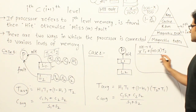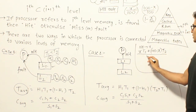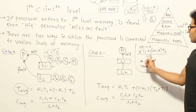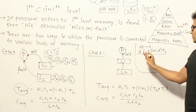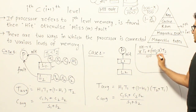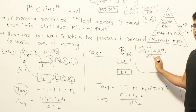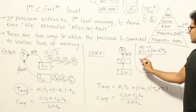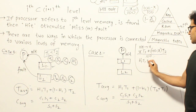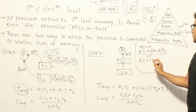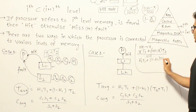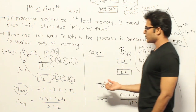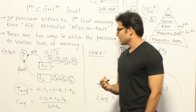So the average access time for the parallel case is: (x by 100) into T1 plus ((100 minus x) by 100) into T2, which simplifies to H1 into T1 plus (1 minus H1) into T2.